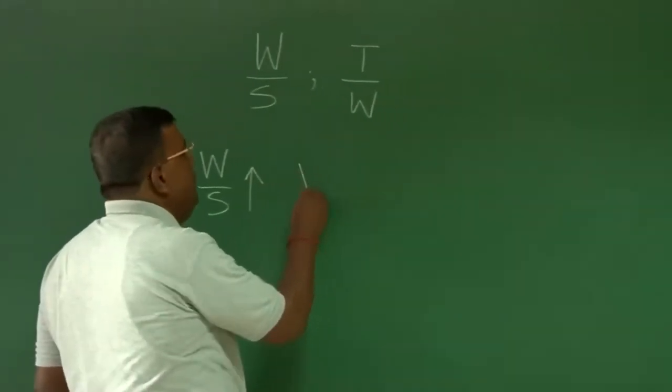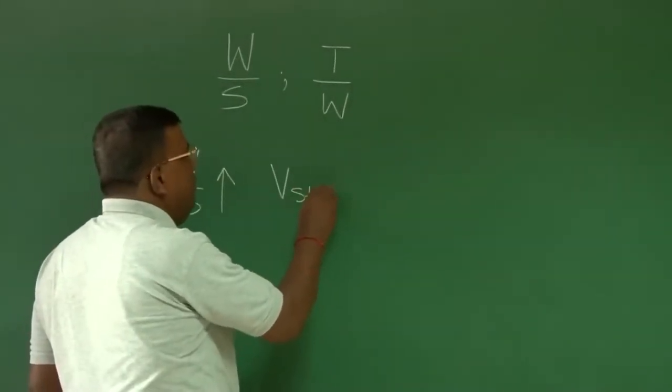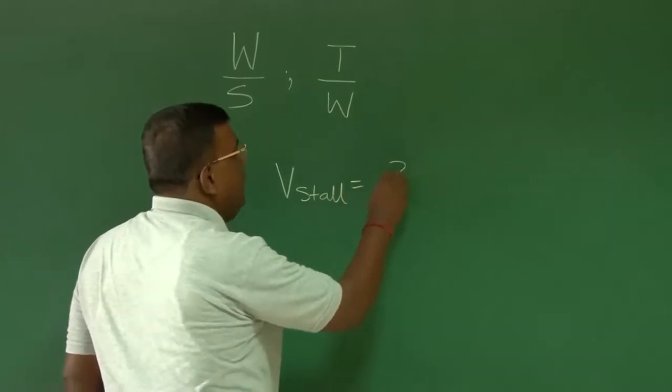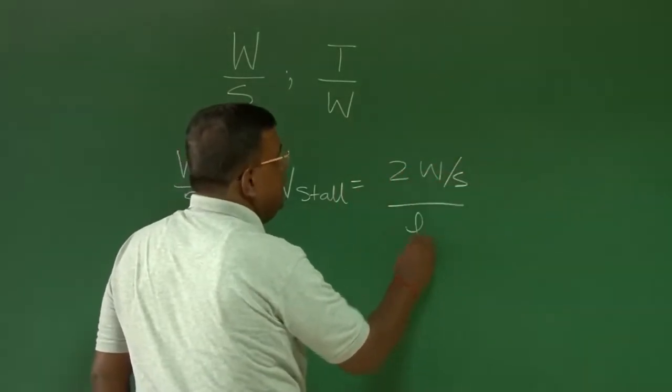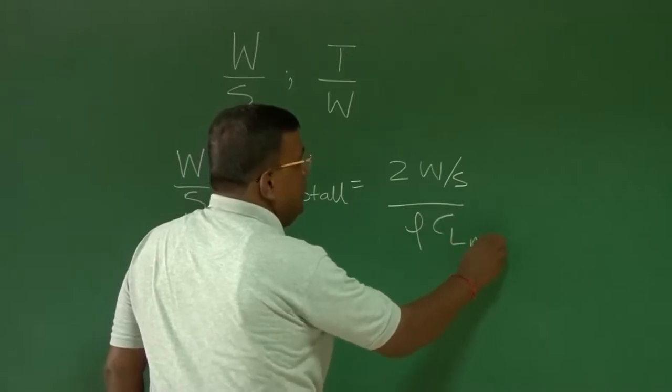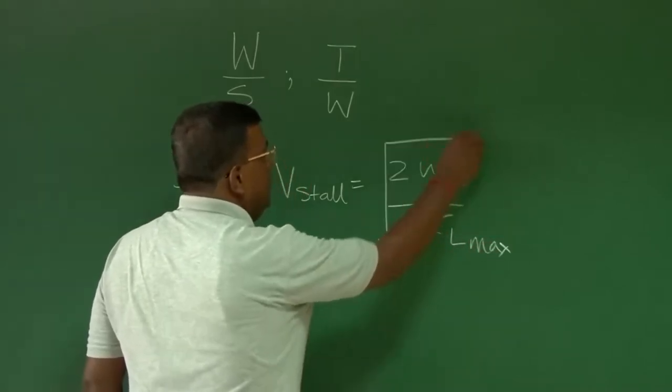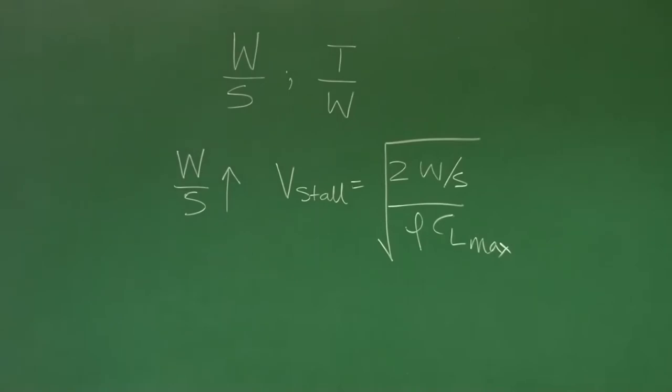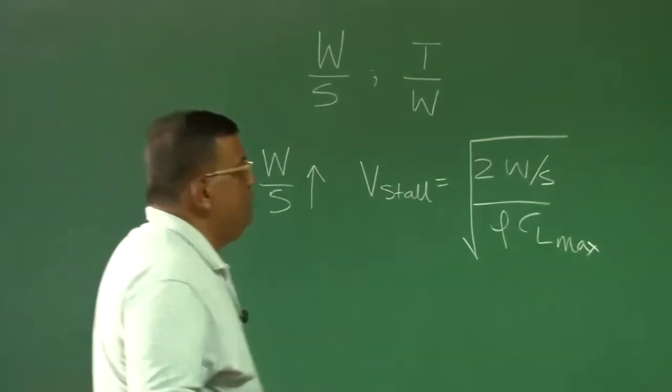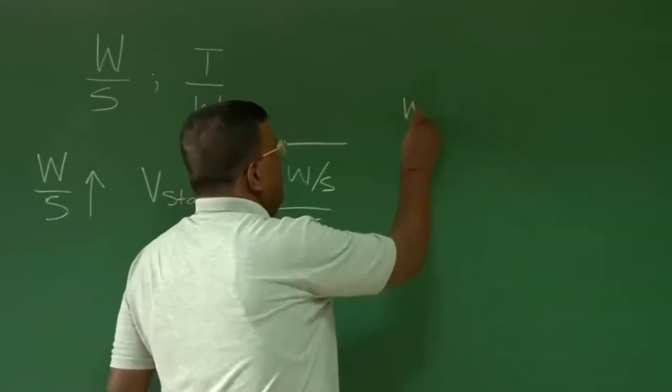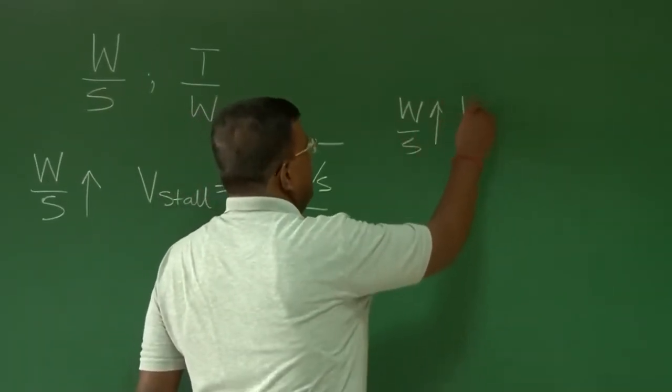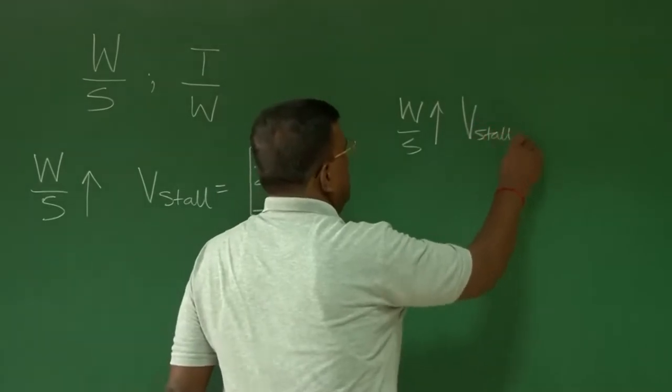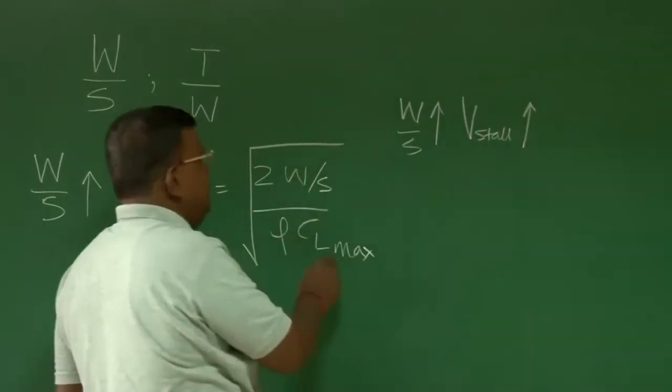We know that V stall is very important parameter which can be expressed as square root of 2 wing loading by rho CL max. It gives us few careful observations, one is of course you can see that if wing loading goes on increasing, then V stall also goes on increasing if other things are kept same.